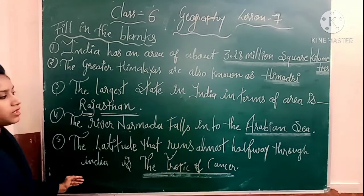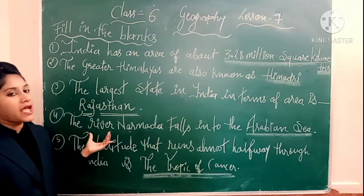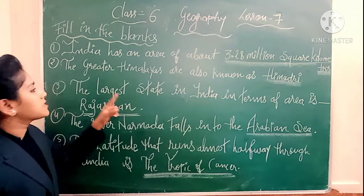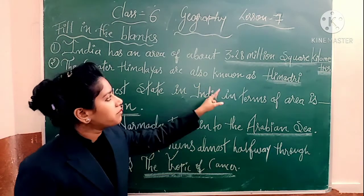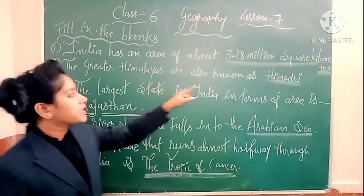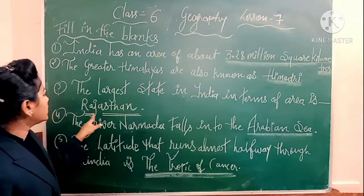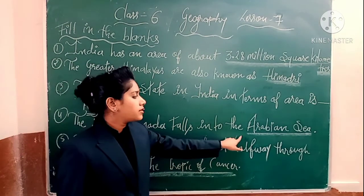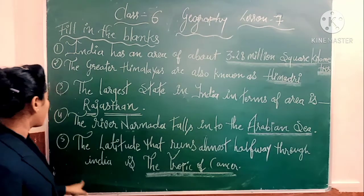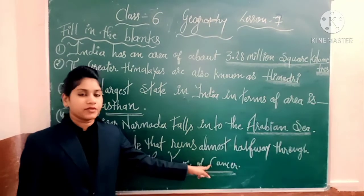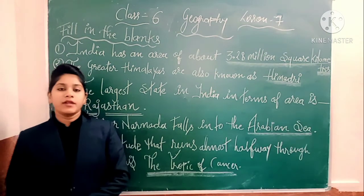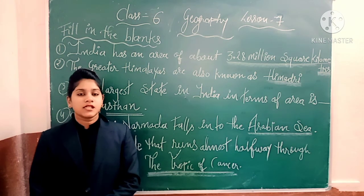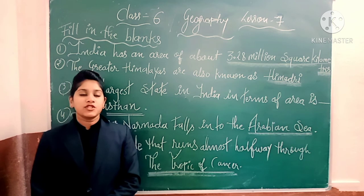So we have done fill in the blanks for lesson number 7. I will repeat only the answers. Your first answer is 3.28 million square kilometer. Second is Himadri. Third is Rajasthan. Fourth is the Arabian Sea. And fifth is the tropic of cancer. So students, we have done our fill ups. Now we will continue in our next video — there are some other exercises. Bye-bye students, take care.